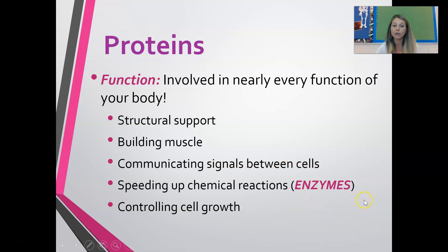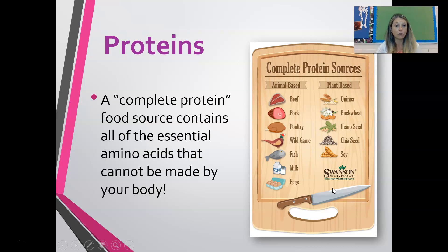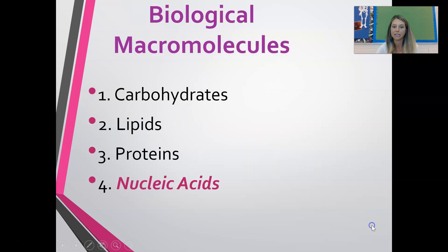Examples of good sources of protein include meats, eggs, nuts, beans, fish, cheese, and milk. Hemoglobin and insulin are proteins in the body needed for different functions. If you've heard eggs called a complete protein food source, that means eggs contain all of the essential amino acids your body can't make on its own.